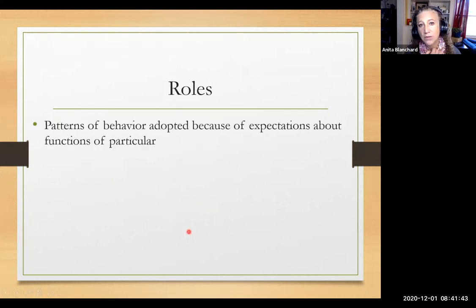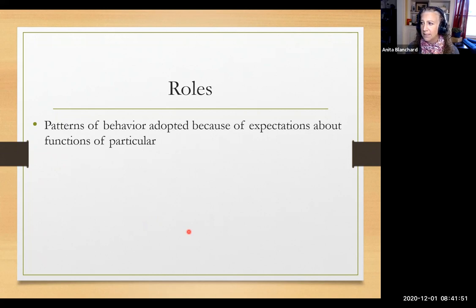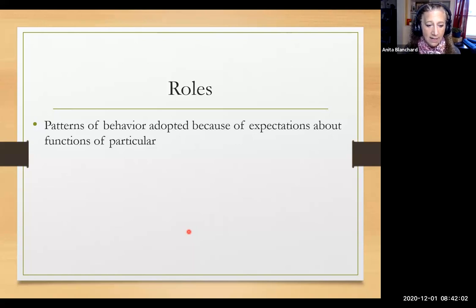Roles — we've talked about roles a bit before. They become more formalized when we talk about groups. Roles are patterns of behaviors that people adopt based on what they expect to be doing. My favorite example: take a group of people who don't know each other, randomly pick one person, and say 'you're the leader.' All of a sudden they begin to enact role behavior.